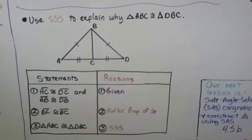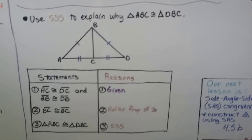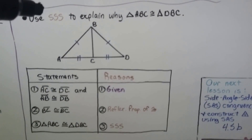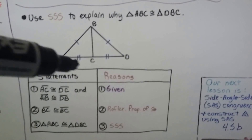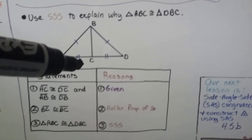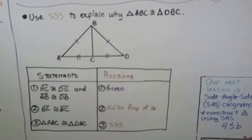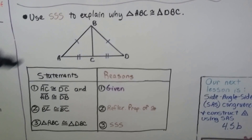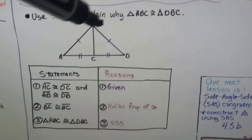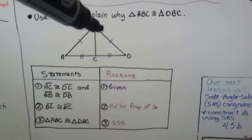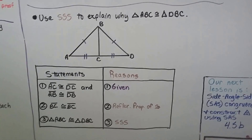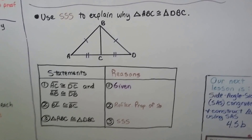Our statement is that segment AC is congruent to DC — two marks here and two marks here, so those are congruent. We also know that AB is congruent to DB — congruent marks here. That's given in the diagram.